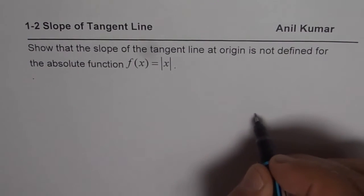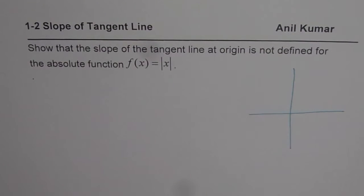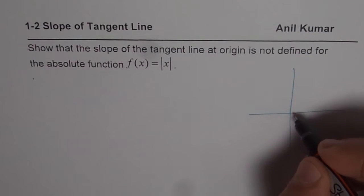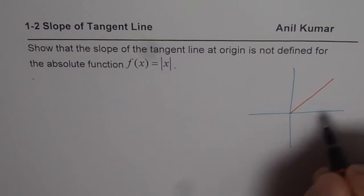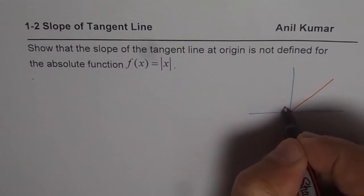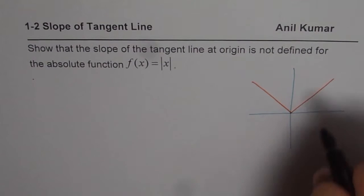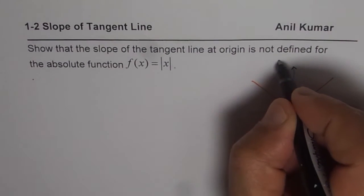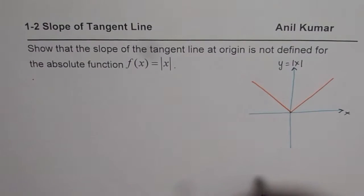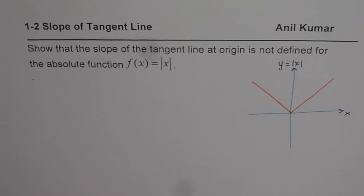This is one of the most important questions you will come across, and it can be asked in many different ways. Let me first sketch the function itself. Absolute value of x is defined as y = x when x ≥ 0, and y = −x when x < 0. On the axes we have x, and that is our function y = |x|. What we need to show is that the slope of the tangent line at the origin is not defined.